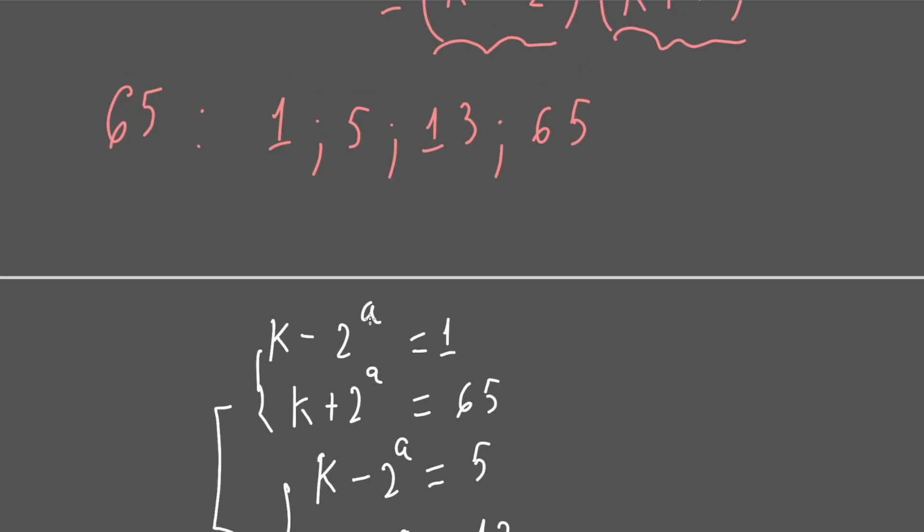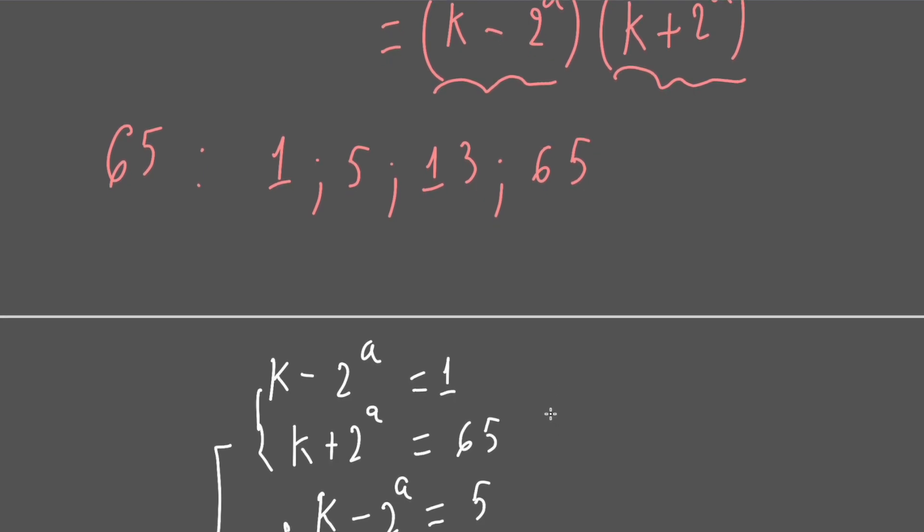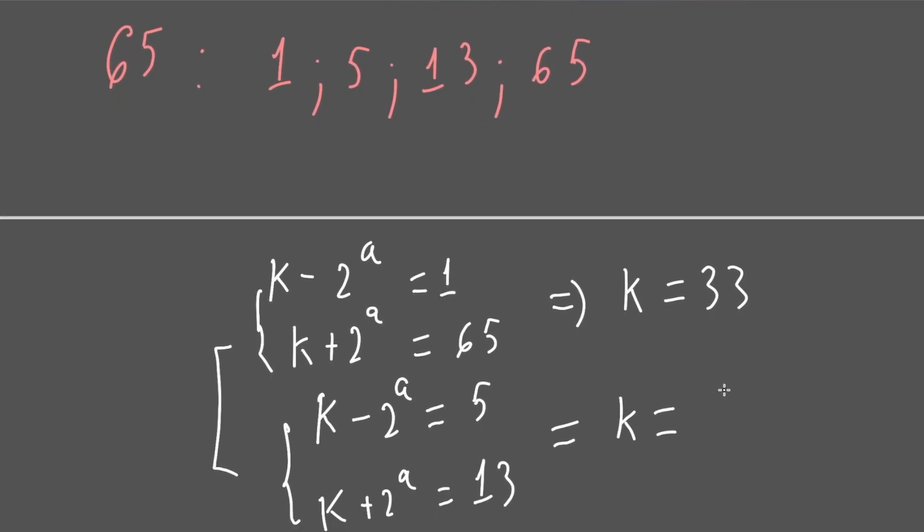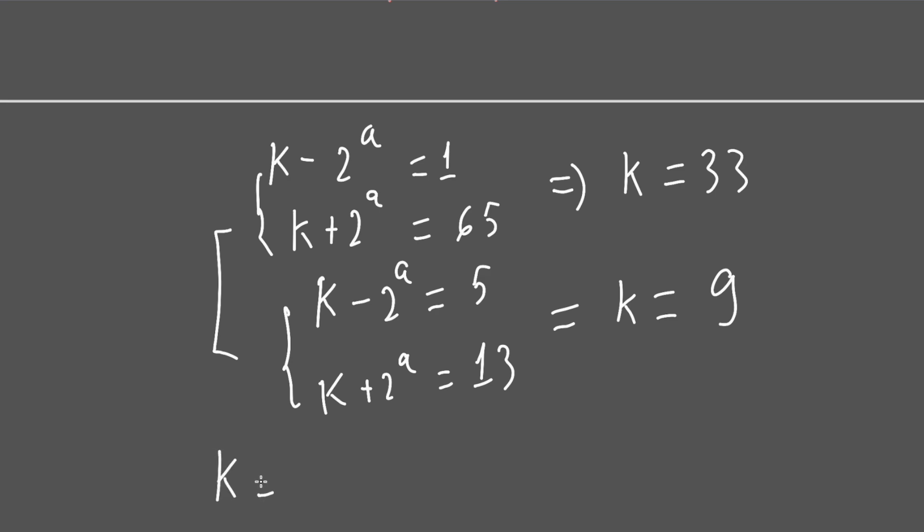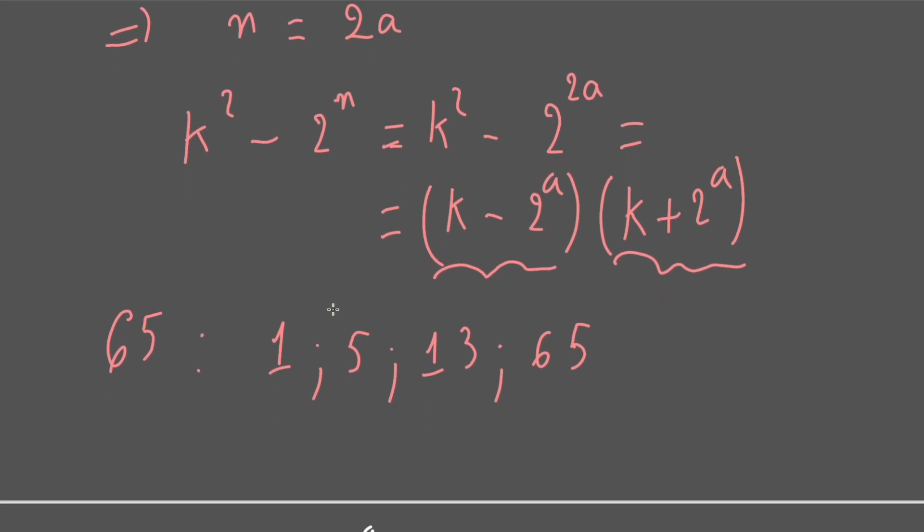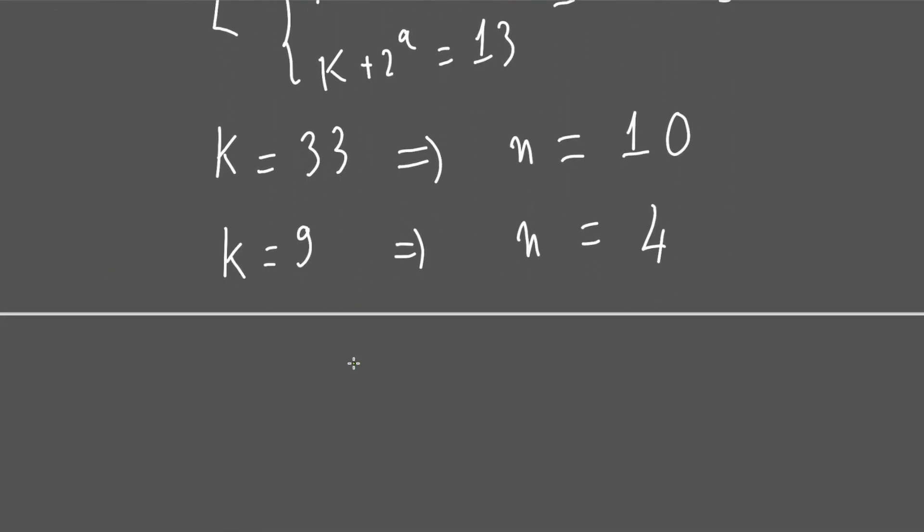By this way we can find the value of k is k = 33 and k = 9. Then once k = 33 it means n will be equal to 10, and when k = 9 then obviously n = 4. So finally the set of roots of this equation is (10, 33) or (4, 9).